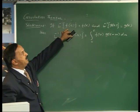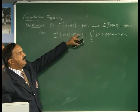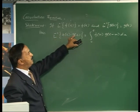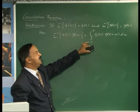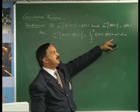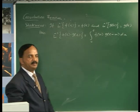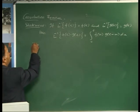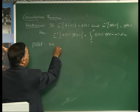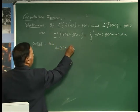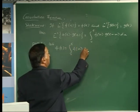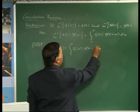If L inverse of F(s) equals f(t) and L inverse of G(s) equals g(t), then L inverse of F(s) into G(s) equals the integral from 0 to t of f(u) into g(t minus u) du. Proof: it is very simple, very easy. Let phi(t) equal the integral from 0 to t of f(u) into g(t minus u) du.